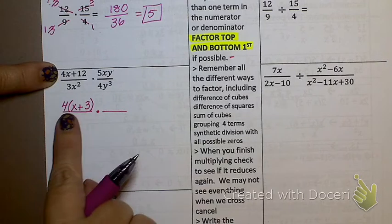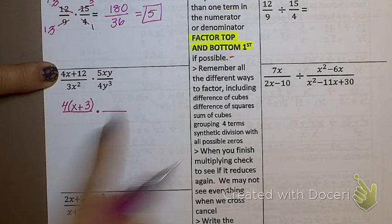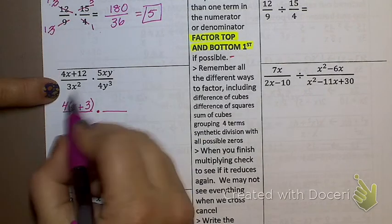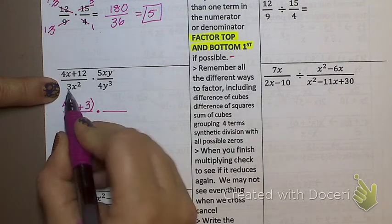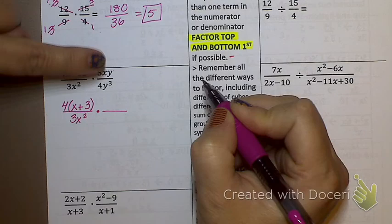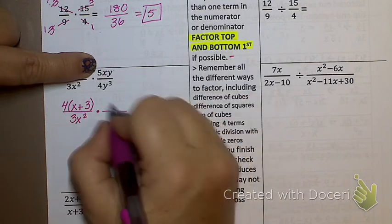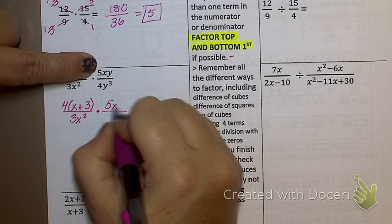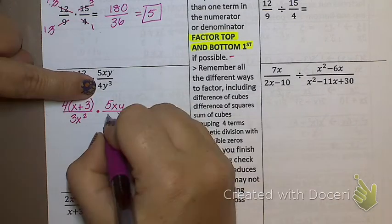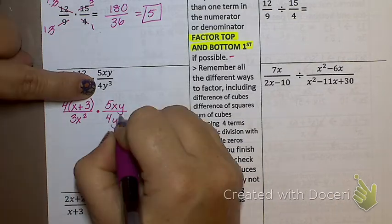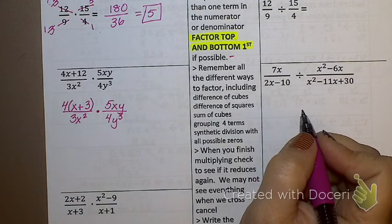Notice I kind of rewrote fraction times fraction. I'm just filling in stuff. Three X squared, can I factor that? No. All right. Five X Y, can I factor that? Why can't I factor those again? They're monomials. And four Y cubed? Four Y cubed. So far so good?